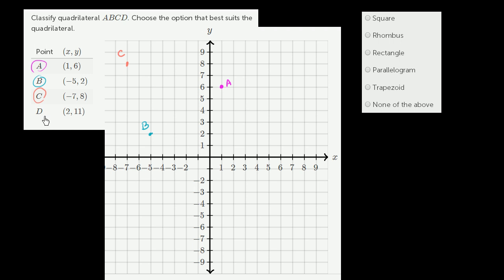And then finally, point D is at 2 comma 11. 2 comma 11. And actually that kind of goes off the screen. This is 10, 11 would be right like this. So that would be 2 comma 11. If we were to extend this, this is 10 and this is 11 right up here. 2 comma 11.